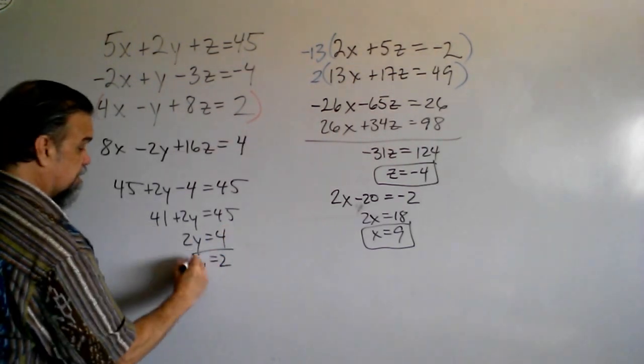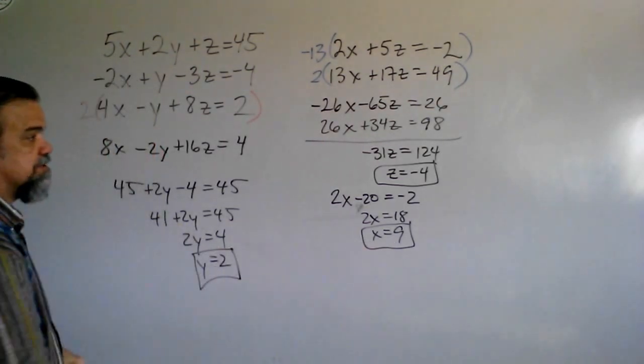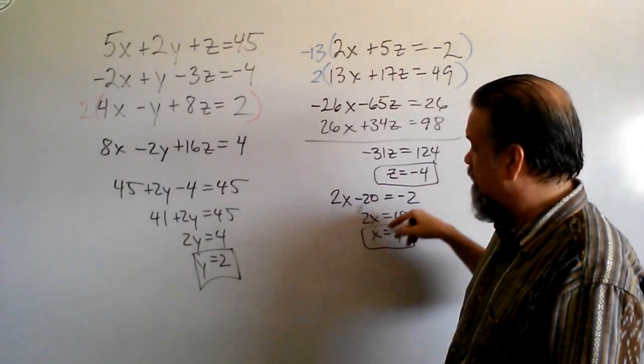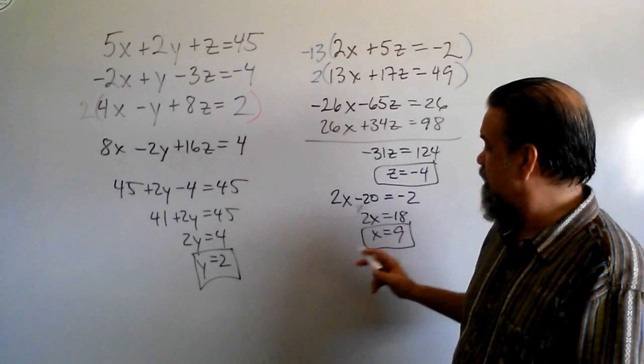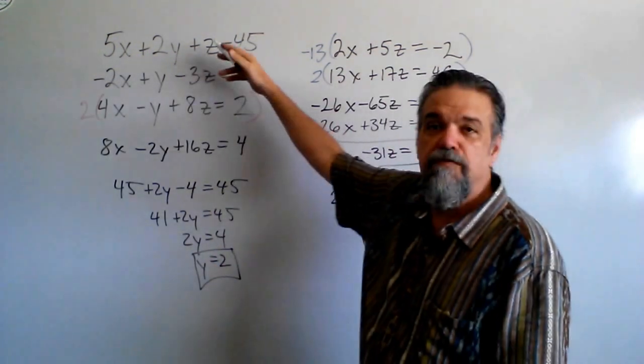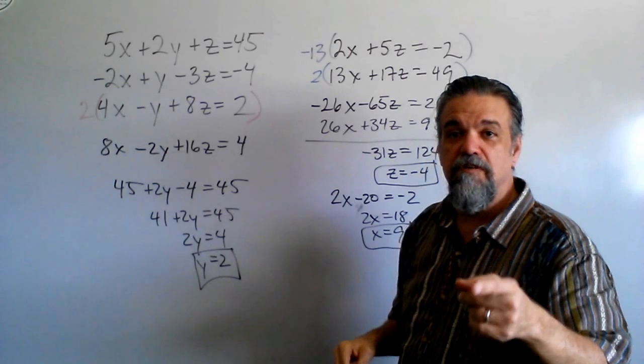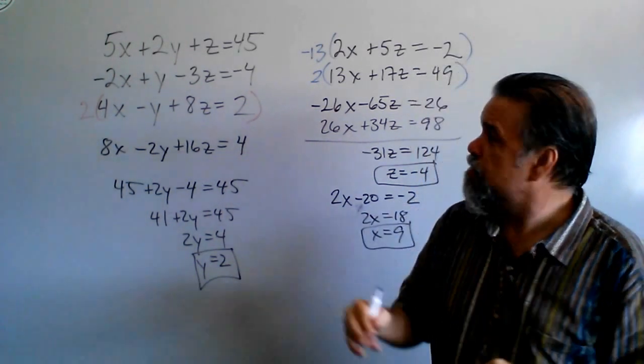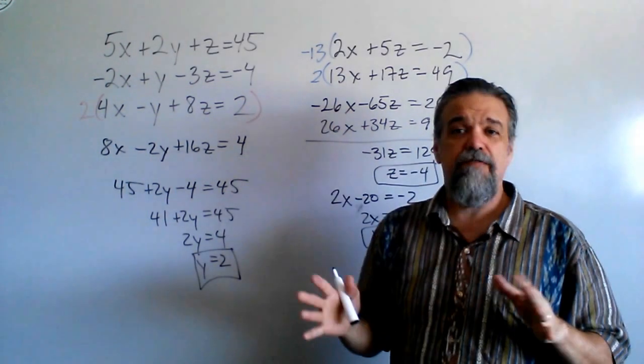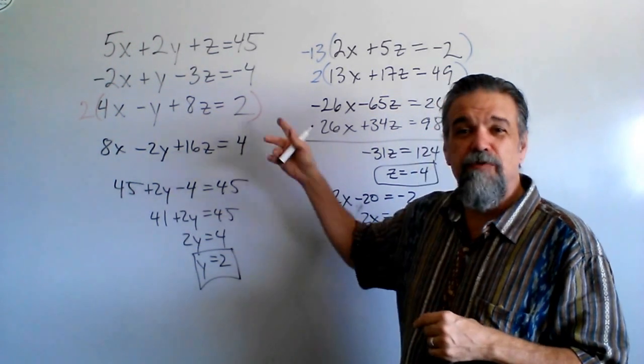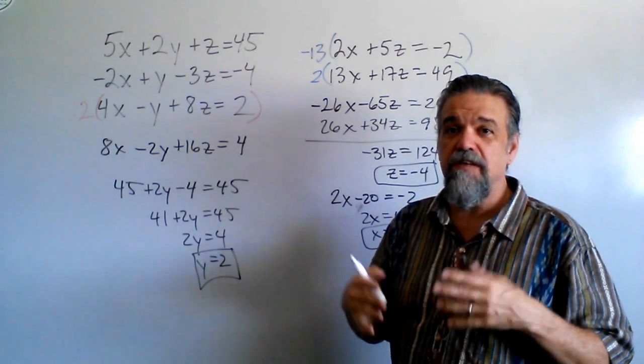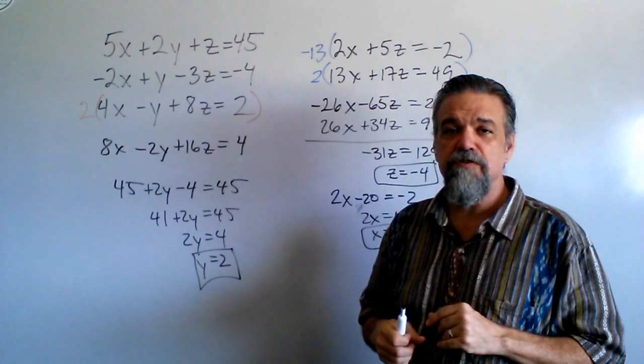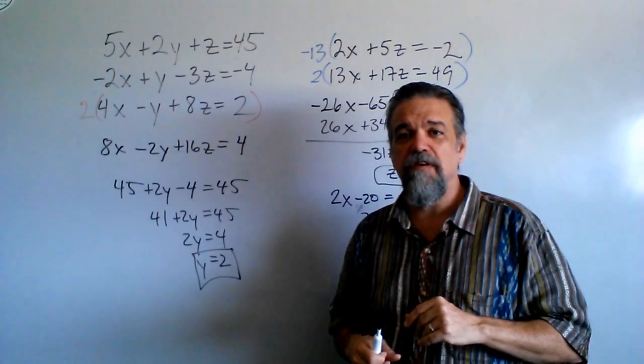And now, I've got x is 9, y is 2, z is negative 4, and I'm going to leave it to you to check this by replacing your x with 9, your y with 2, and your z with negative 4 on all three of these equations, and what you'll see is, it's true. Hope this helps. Now, I do want to mention that we used elimination to solve these. You don't have to use elimination. You can use substitution. I really find that elimination is, 9 times out of 10, the best method to use, though, when you have larger systems of linear equations. All right, like I said, hope this helps, and see you next video. Bye-bye.